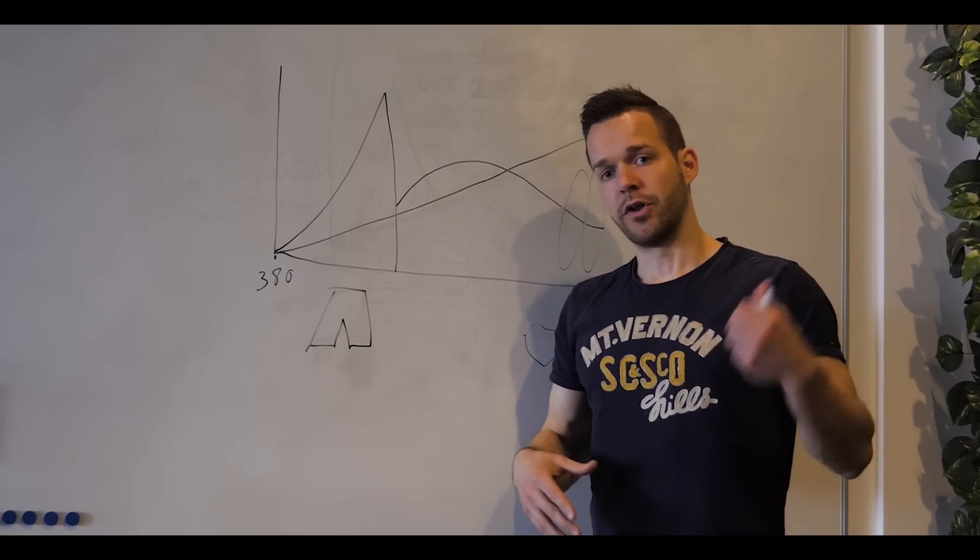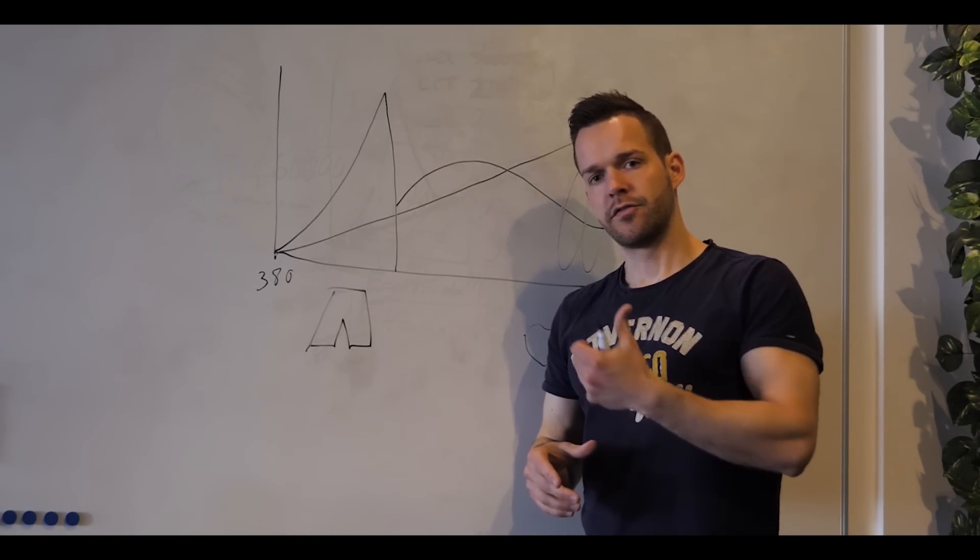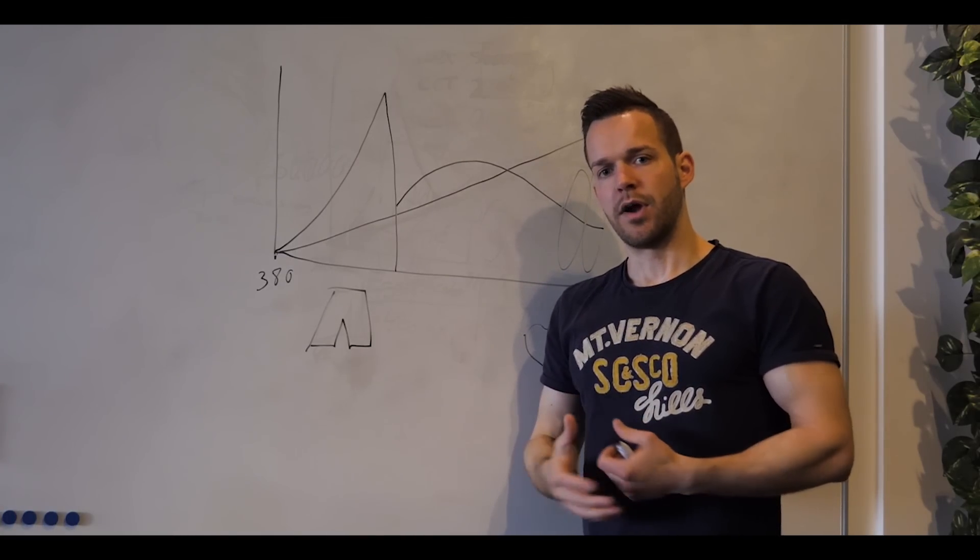And on the other hand, if we go down to an incandescent bulb, we have 2700 Kelvin and a CRI of 99.